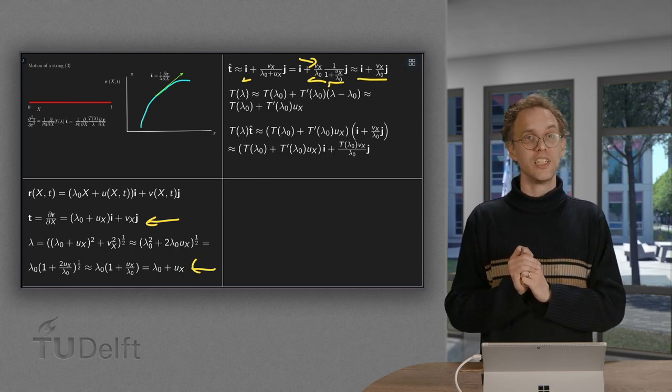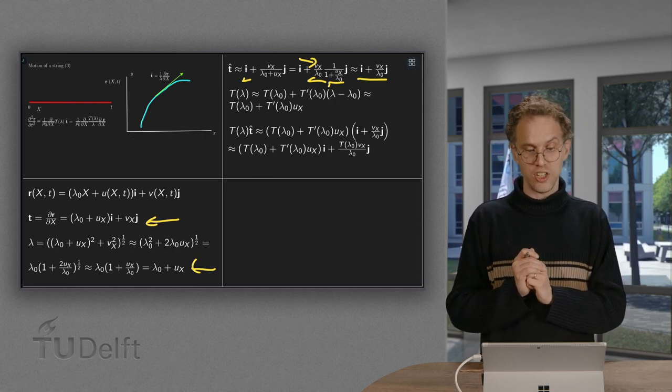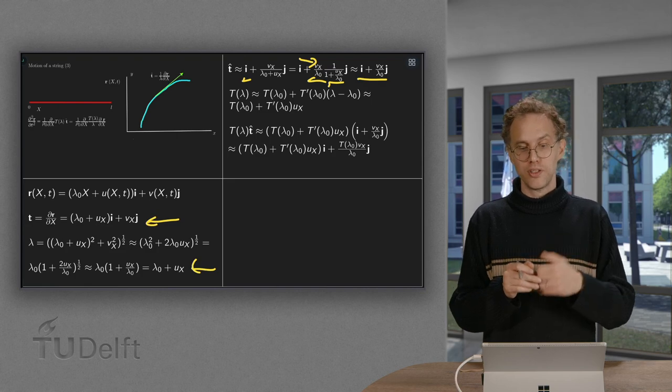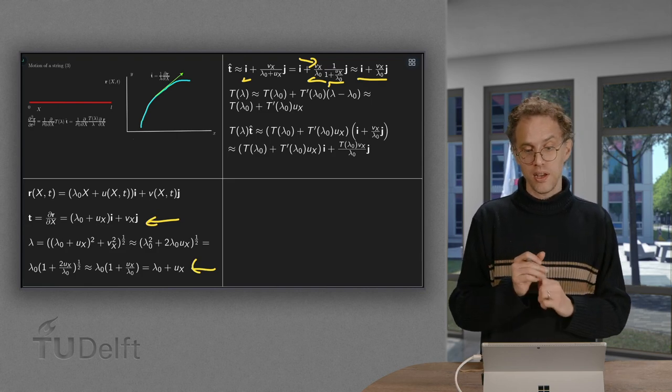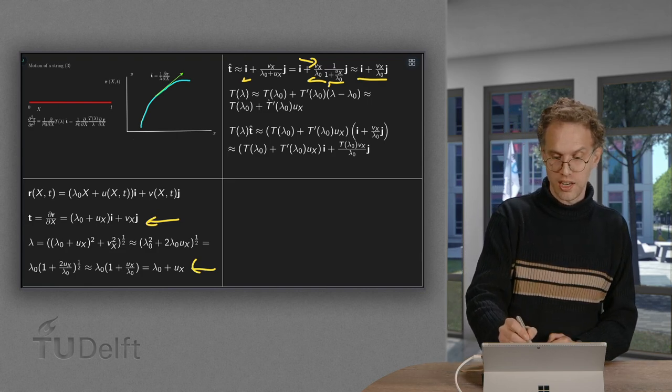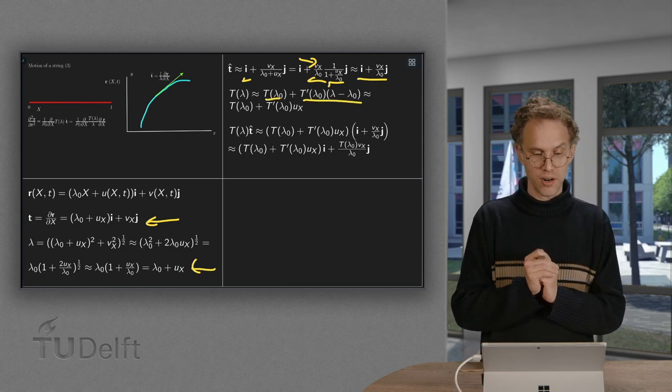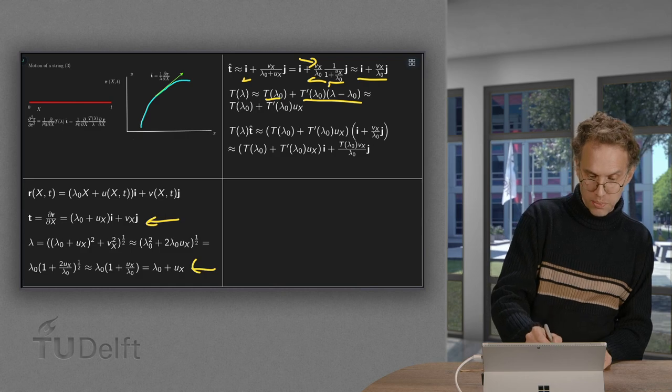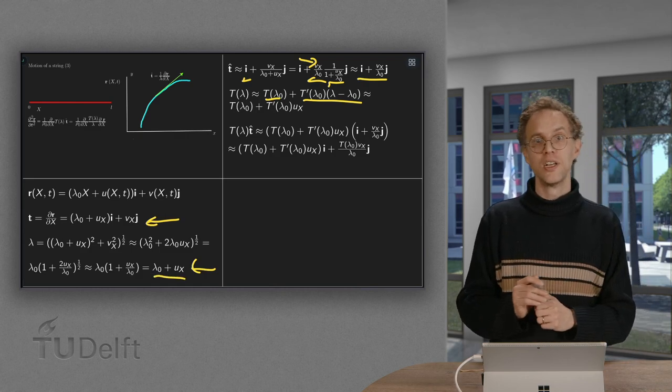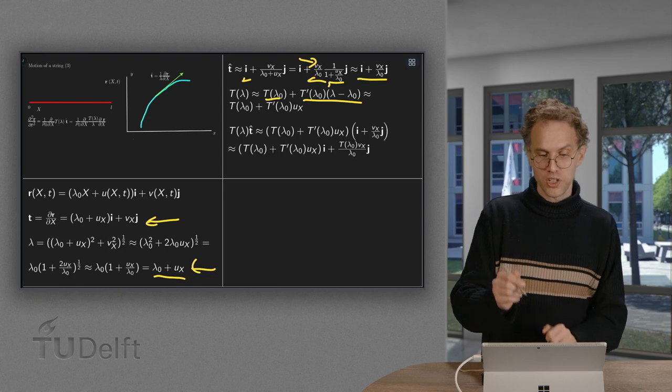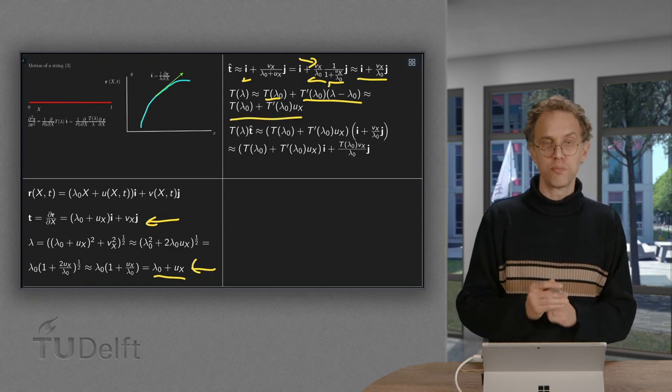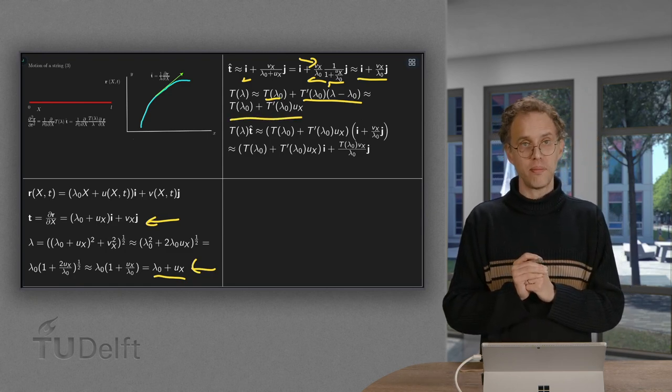Moving on to linearization our tension in the string. t of lambda. t with respect to lambda. Is up to first order the t at lambda 0 plus t prime at lambda 0 times lambda minus lambda 0. But lambda is approximately lambda 0 plus ux. So lambda minus lambda 0 is approximately ux. So here we have our approximation for t of lambda.